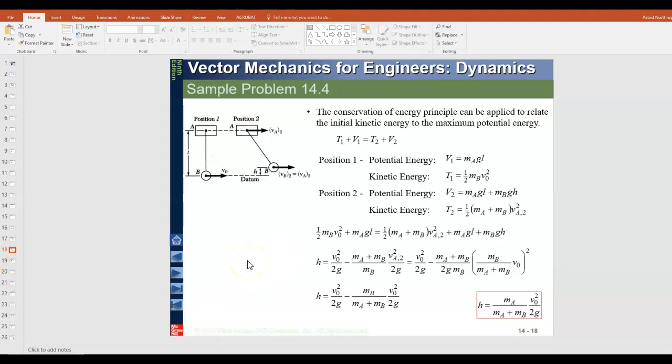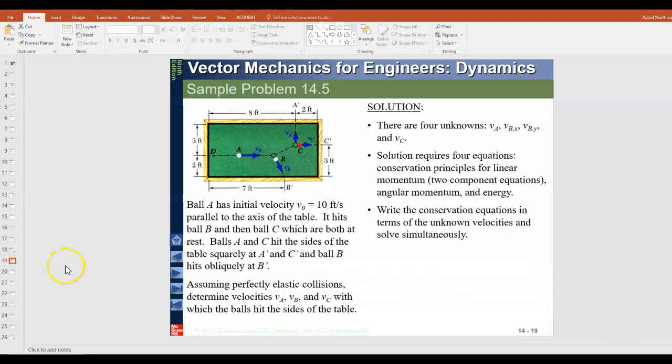All right. And then just working this out, we have the position one potential and kinetic energy of a and b. And we can go through and work this out for that height, which we will find in terms of the mass of both of those objects, the initial velocity and gravity.